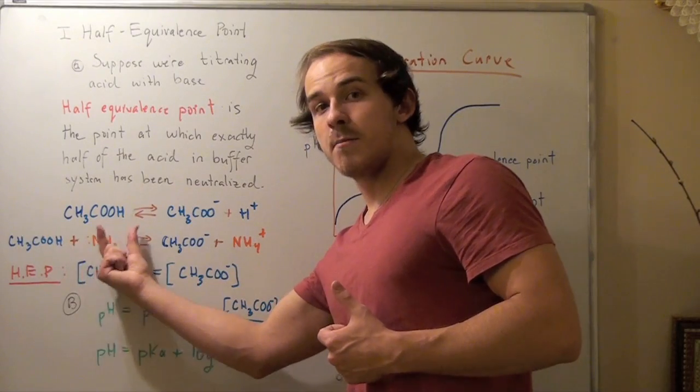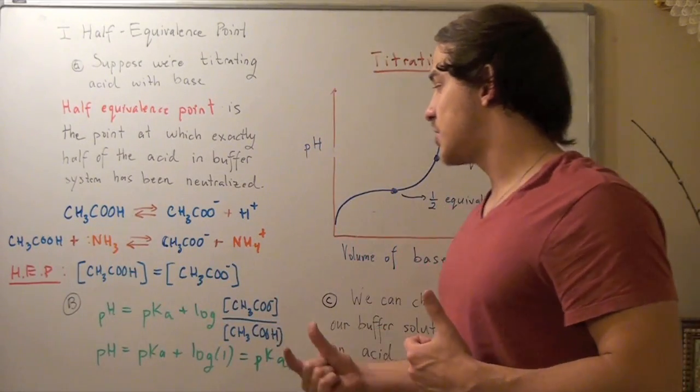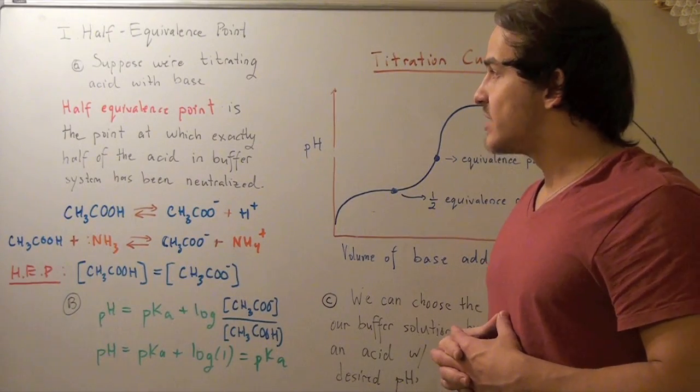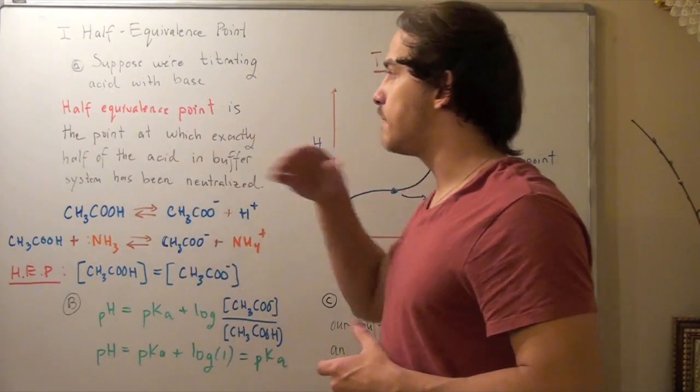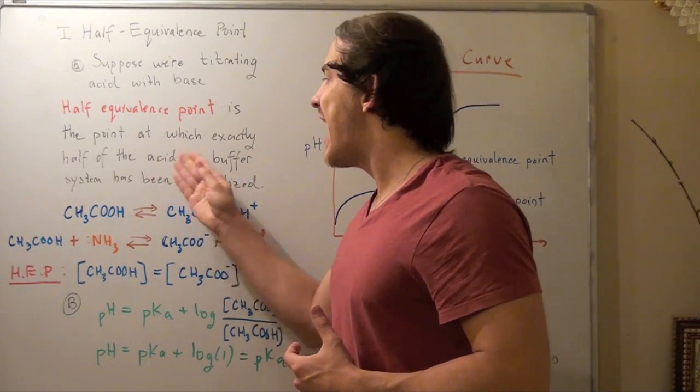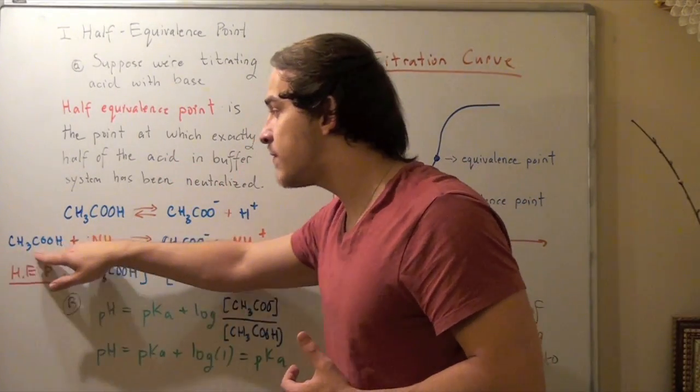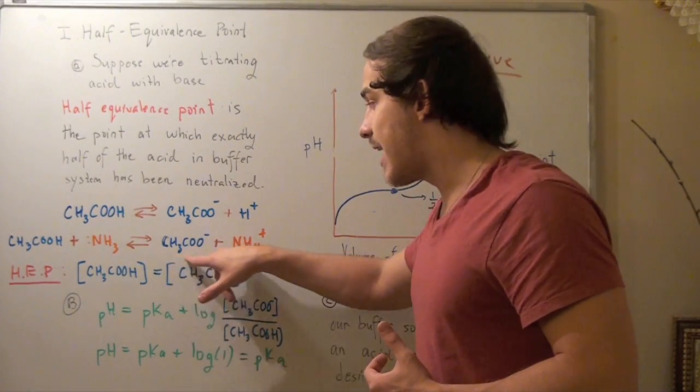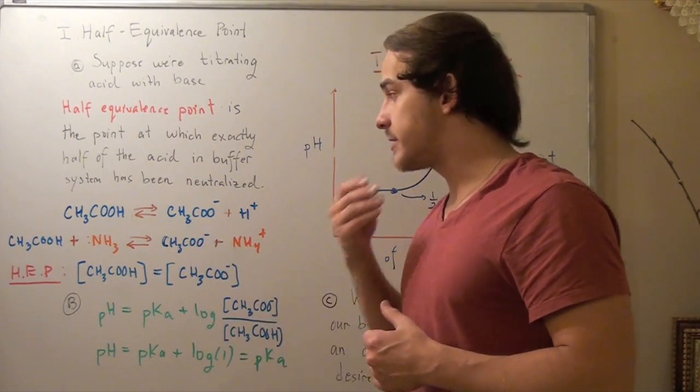This base, the ammonia, gains an H becoming ammonium. Now, let's look at this definition again. The half-equivalence point is the point at which exactly half of the acid has dissociated into the conjugate base, has been neutralized.